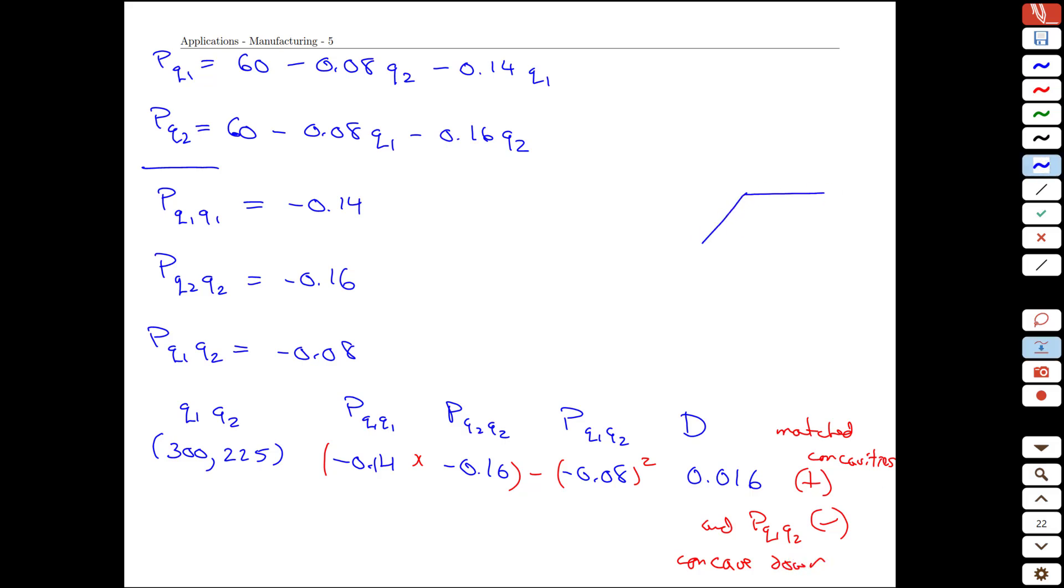And so if we were to draw this, we have a critical point, tangent plane is flat. Everywhere around there, it's concave down. And so what we found is the point 300, 225 is a local, looking at the shape here, it's a local peak or a local max for the profit function, which is exactly what we would be looking for as a manager.